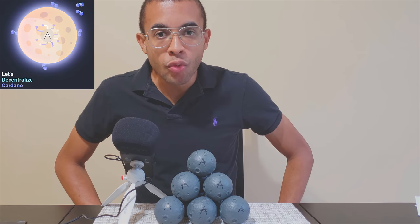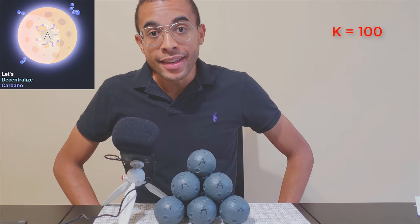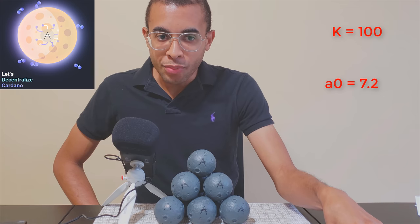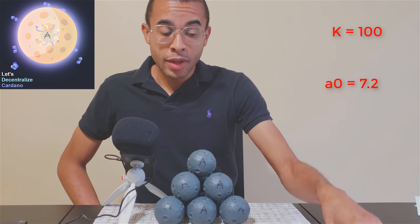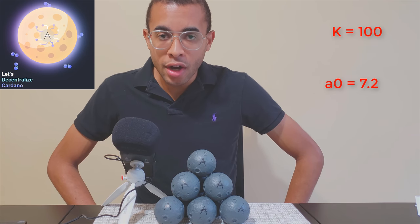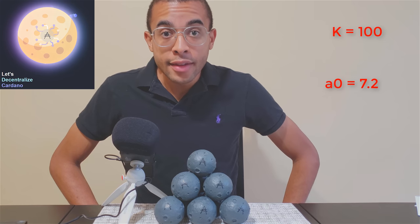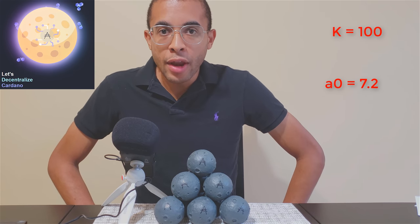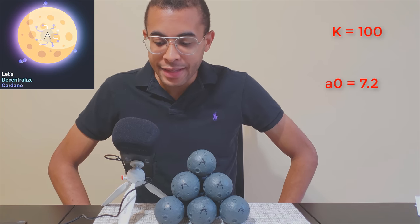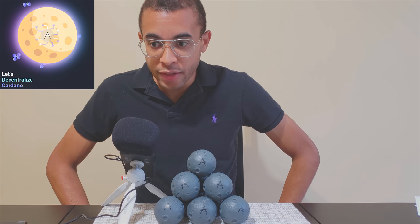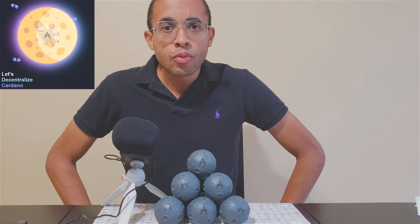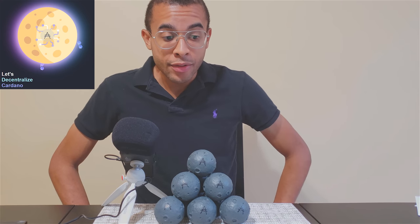My ideal k value is k equals 100, and my ideal a zero factor is 7.2. I've run the spreadsheet multiple times using Umed's spreadsheet - he was also on the Cardano Effect - and I think that 7.2 with a k value of 100 would properly incentivize large stake pools or people that are putting larger amounts of pledge to continue operating their pool. At the end of the day, they are taking all the financial risks and deserve a larger cut of whatever rewards are going to be given out.